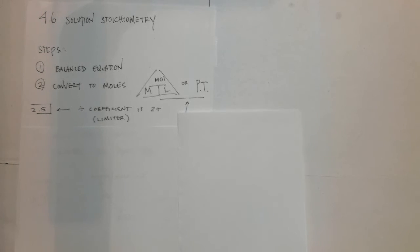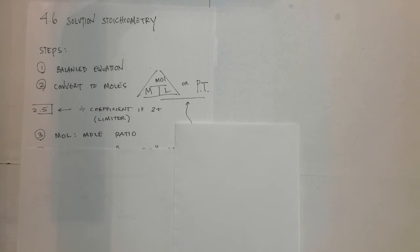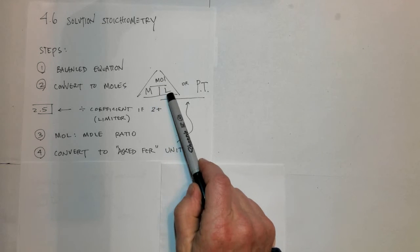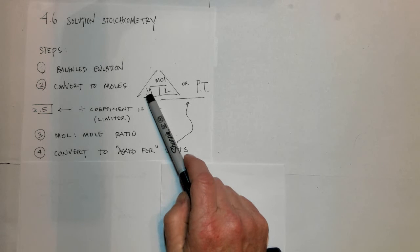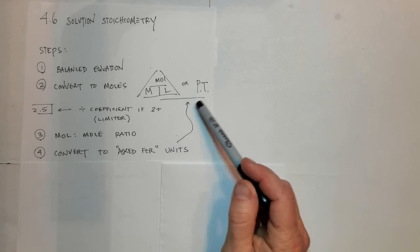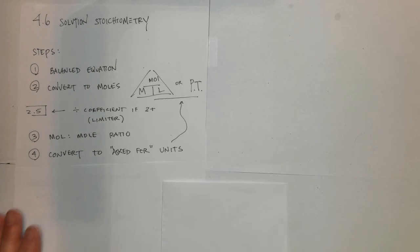Step two and a half only occurs if there's more than one reactant, and this is to divide by the coefficient if there are more than two reactants to determine which species is the limiter. Step number three is to use the mole-to-mole ratio from the balanced chemical equation. And then step number four is to convert to the asked-for units. Many times they'll ask you to find either the volume of a solution or the molarity of a solution, but they could still ask you to find grams, particles, molecules, or atoms as well.